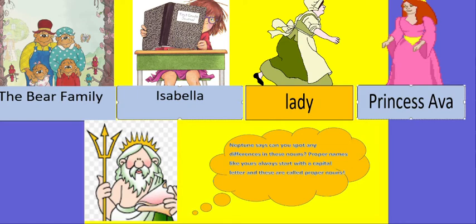I've got three blue labels on my board: The Bear family, Isabella, and Princess Ava. They all start with a capital letter, and there is a very special reason for this — because those are real names. All names are a special type of noun called a proper noun, and they have to start with a capital letter. I hope that when you write your name you remember your capital letter, because your name is a very special noun too. There is one orange label on the board with the word 'lady' — a lady is a person, but we don't know her real name, so 'lady' doesn't need a capital letter, but the word is still a person noun.